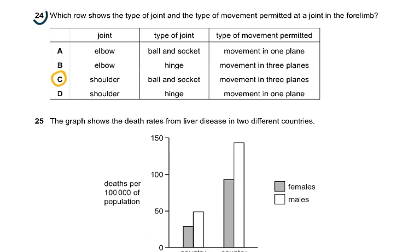Question number 24: Which row shows the type of joint and the type of movement permitted at a joint in the forelimb? The two joints given are elbow and shoulder. The shoulder is a ball and socket joint and the elbow is a hinge joint. That is something you must know.